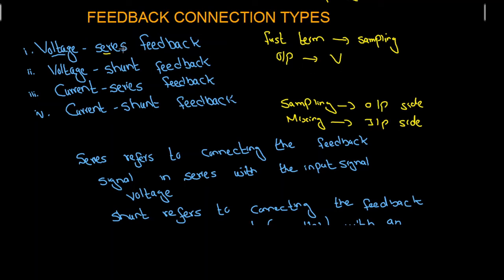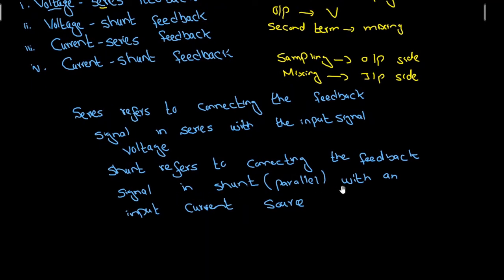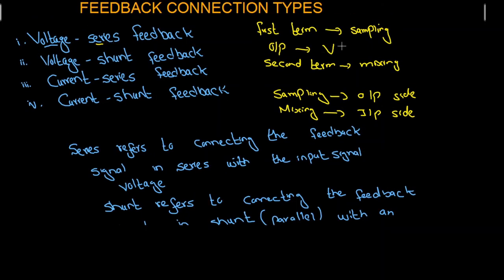The second term indicates the type of mixing, and mixing takes place at the input side. Series refers to connecting the feedback signal in series with the input signal voltage. Shunt refers to connecting the feedback signal in shunt — that is, in parallel — with the input current source. So whenever we have 'series' as the second term, the input signal is going to be voltage; whenever we have 'shunt', the input signal is going to be current.